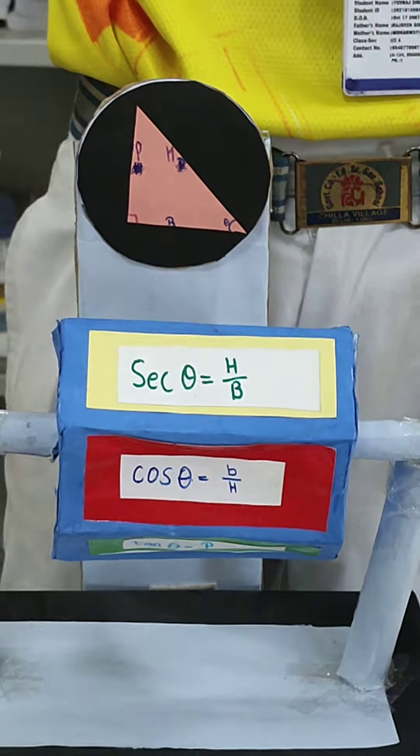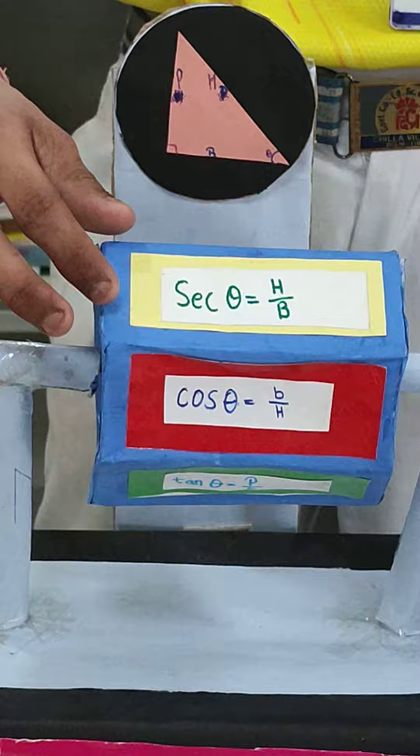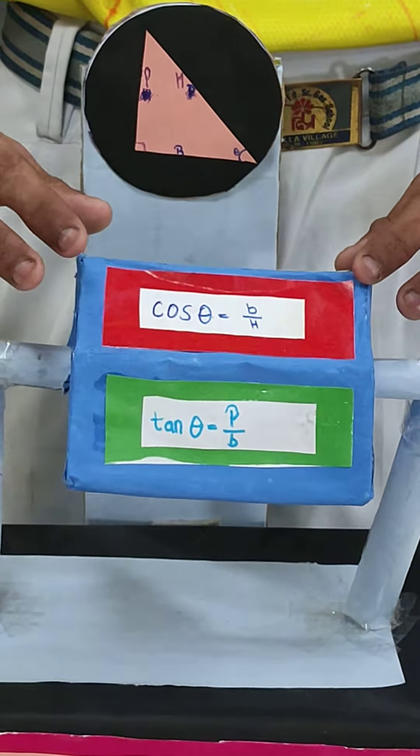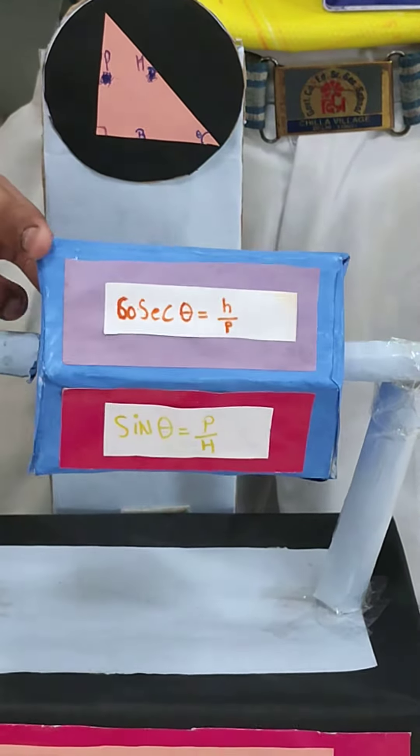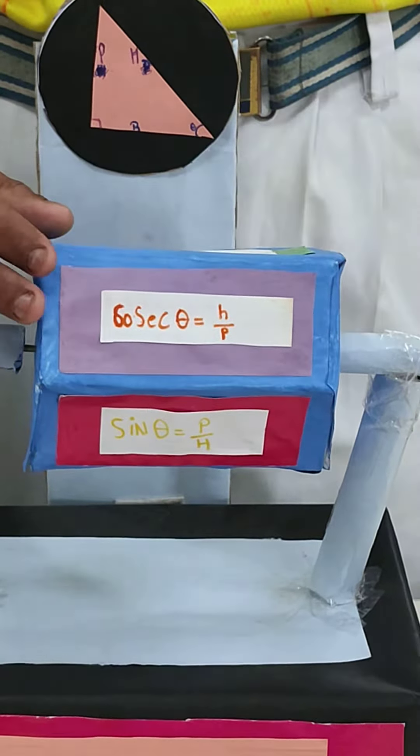We can call this the perpendicular. Up here, we have the hypotenuse. Let's look at sine theta. Using the division, here is tangent theta, perpendicular plus base.